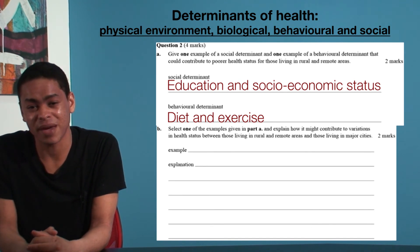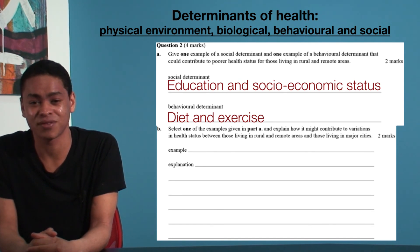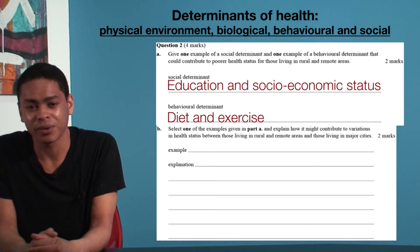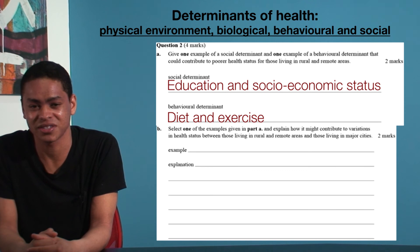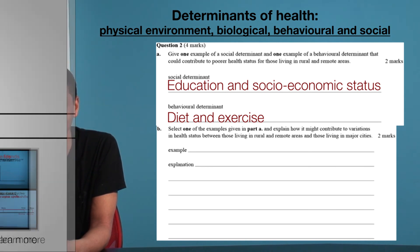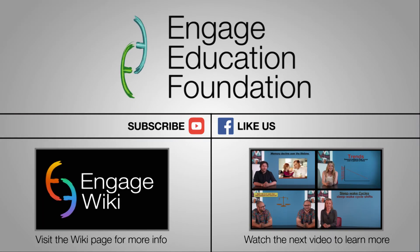Now that we have a basic understanding of the four determinants of health, we can start to address Part B. We will do this in the next video, looking at how to link determinants of health to dimensions of health. Bye for now, and happy studying.